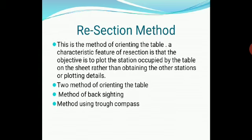The resection method is used with the help of table orientation. In this method, the objective to be plotted on the station needs to be occupied by the table on the sheet, rather than obtaining other stations. The two methods of orienting the table are the method of back-sighting and the method using the trough compass.